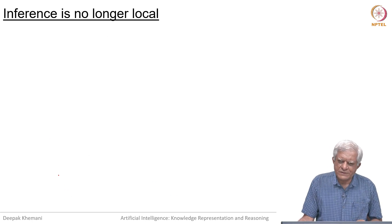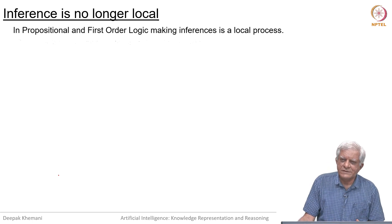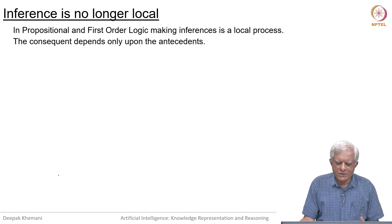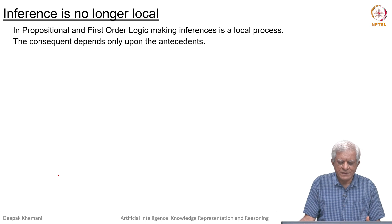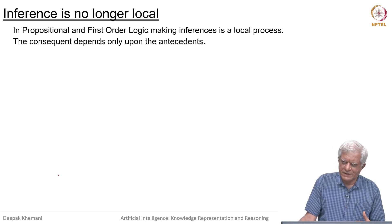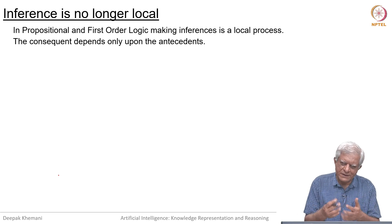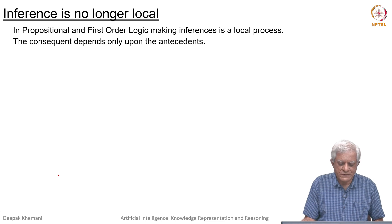One consequence of doing this is that inference is no longer local. In propositional logic and in first-order logic, making inferences is a local process. The consequent depends only upon the antecedents, and if the antecedents are known to be true, then the consequent can be added to the knowledge base.